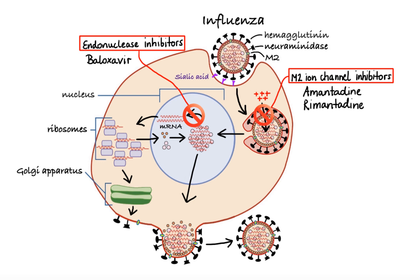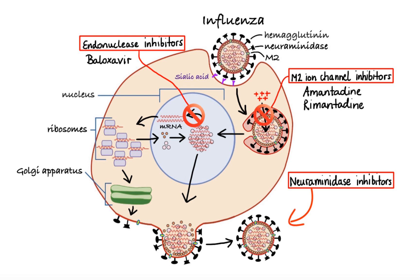Finally, the third class of influenza drugs is neuraminidase inhibitors. The agents in this class exert their antiviral activity by inhibiting the viral neuraminidase enzyme found on the surface of the viral particle. Without active neuraminidase, the virus is unable to cleave sialic acid and unable to escape from the cell. Drugs that belong to this class include oseltamivir, peramivir, and zanamivir.